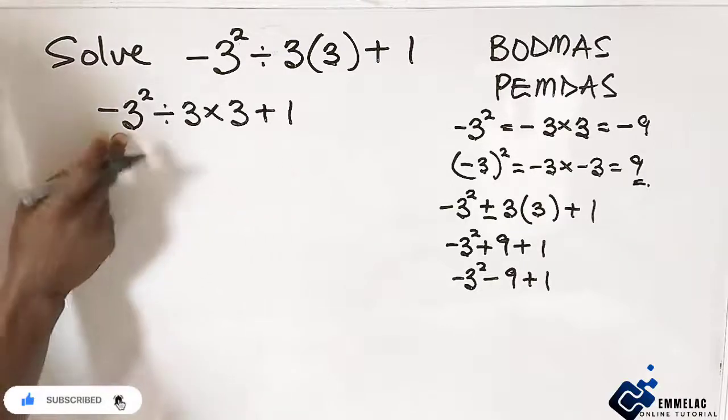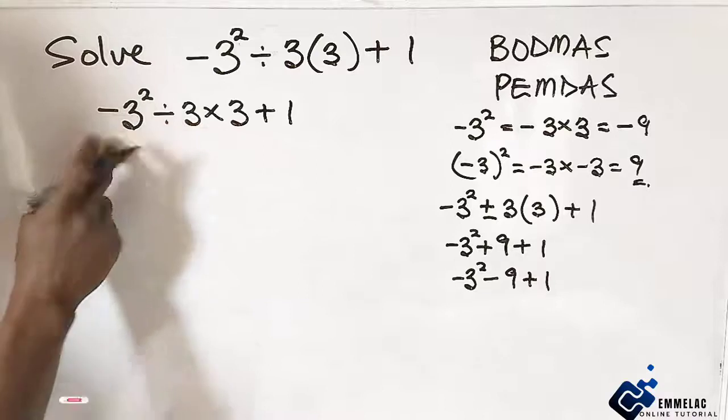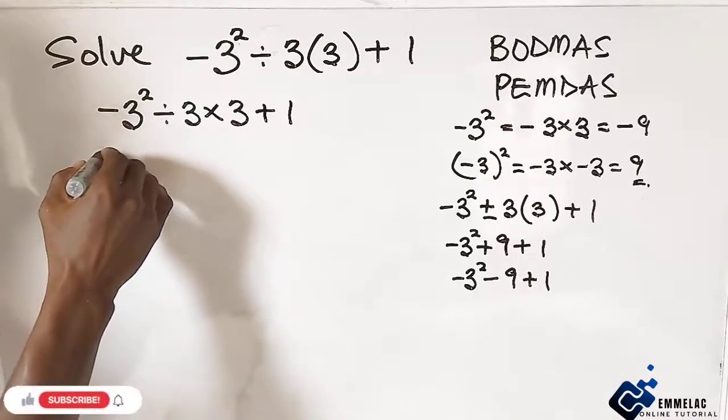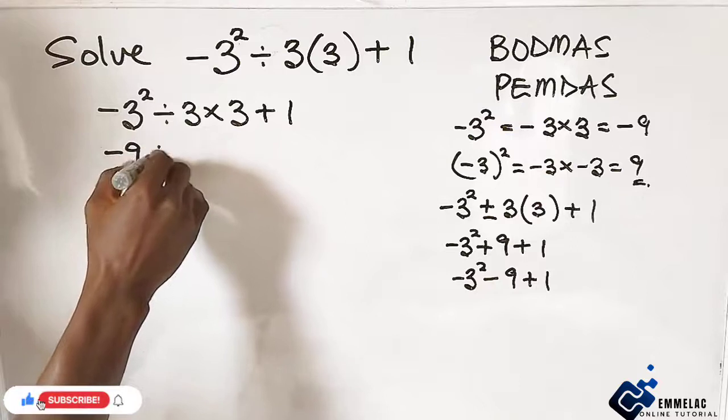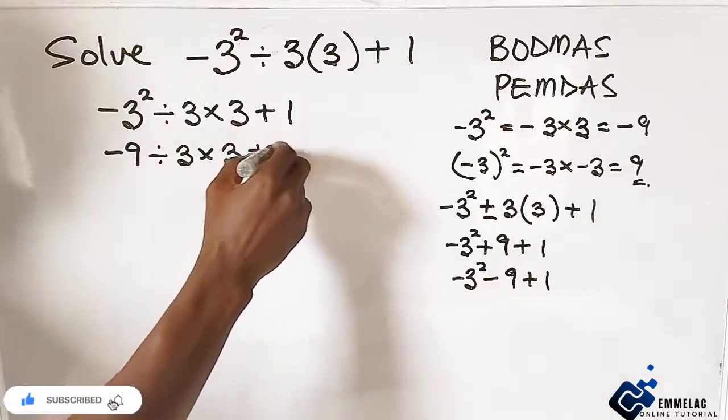Now here, let us change this. Since we've opened the bracket, a lot of changes. So here we have -9, now divided by 3 times 3 + 1.